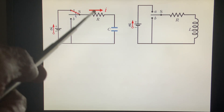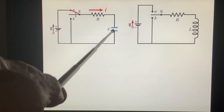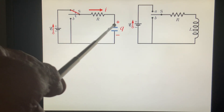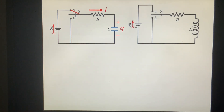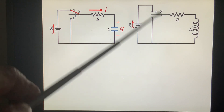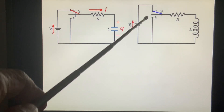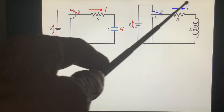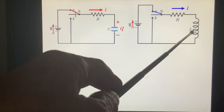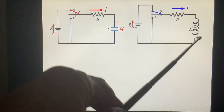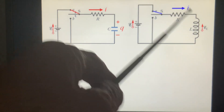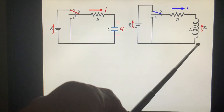Under this assumption, the current charges the capacitor. So this plate is positive charge and this plate is negative charge. Now, if we switch to A and assume a current in this direction, this current goes down. This coil has self-inductance against the change, so this is positive and this is negative.